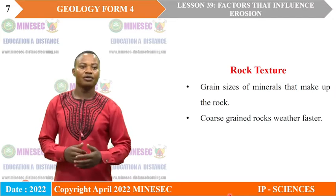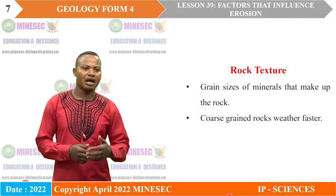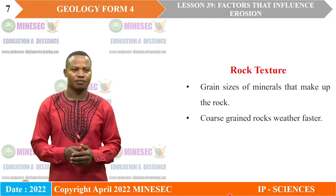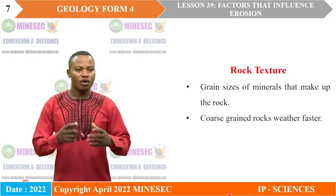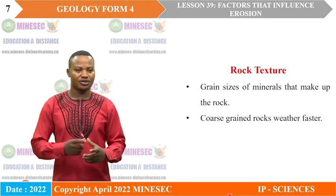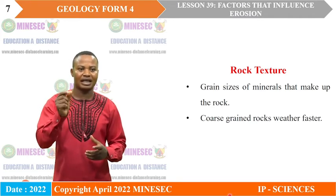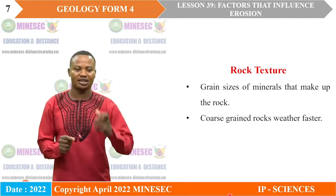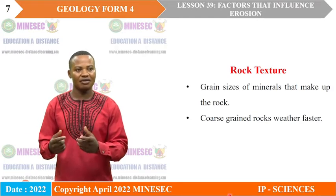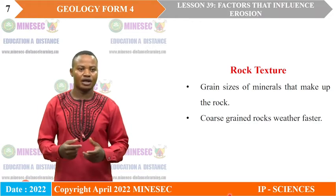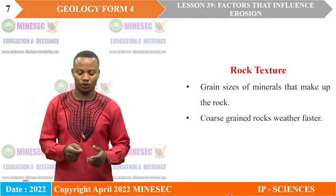Rock texture is the relationship between grain size, grain shape, and grain orientation in a rock. Rocks that are coarse-grained will undergo weathering easily because individual grains will be identified and detached — and once a grain is detached, it renders the other grains unstable. Whereas fine-grained rocks will resist weathering because it is difficult to identify and detach a grain.